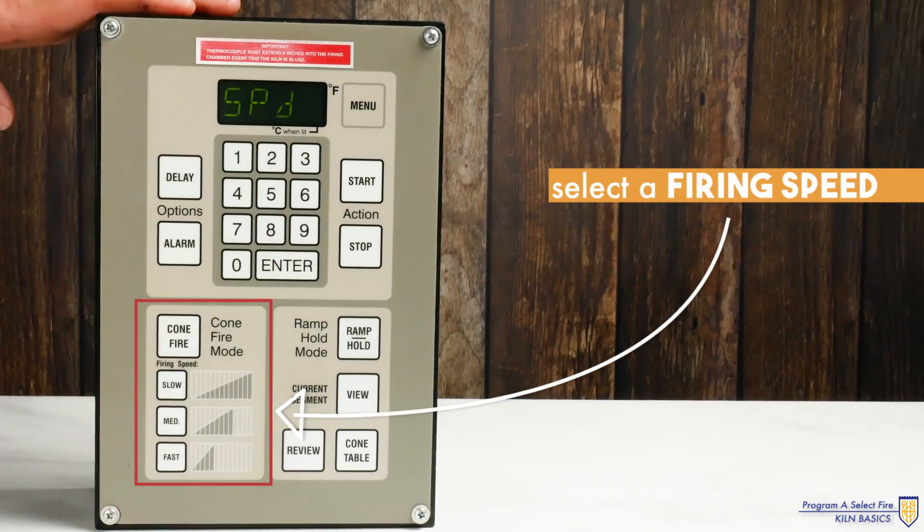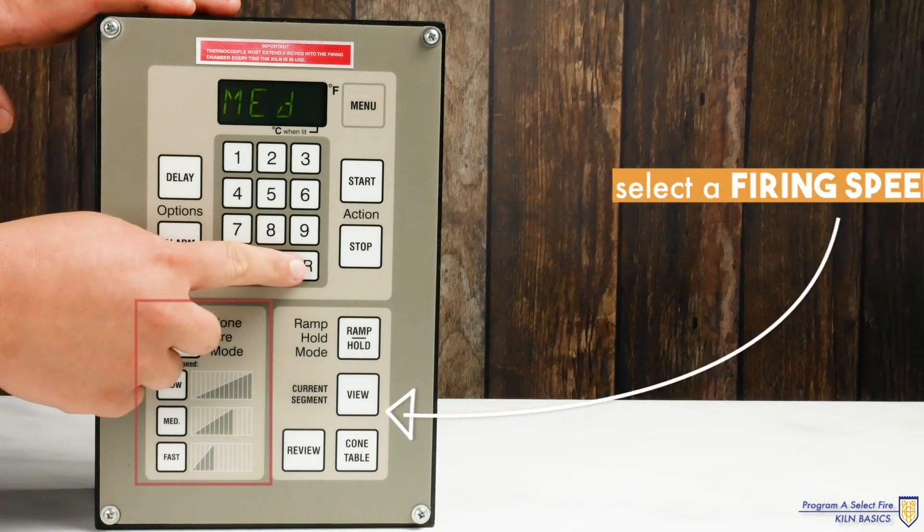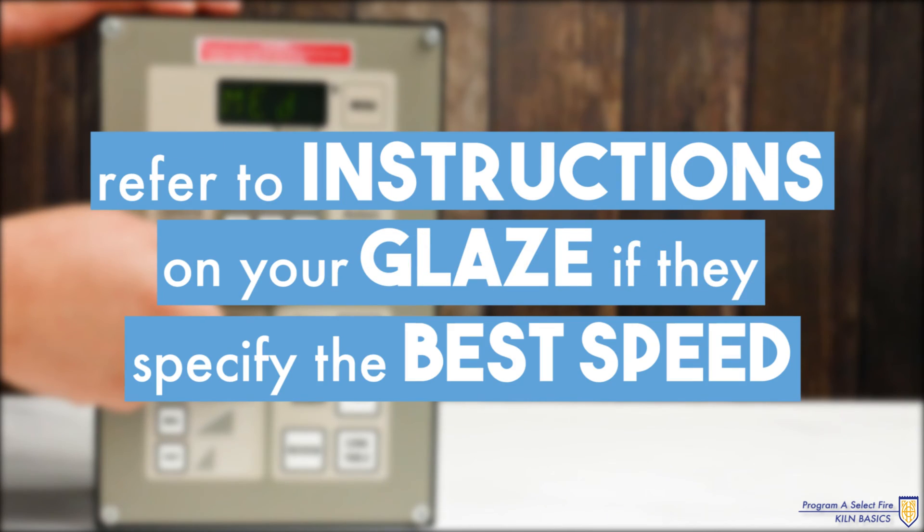It will then prompt you to select a firing speed. Glazed firings are typically medium or fast. Again refer to the instructions on your glaze as they may specify which speed is best.